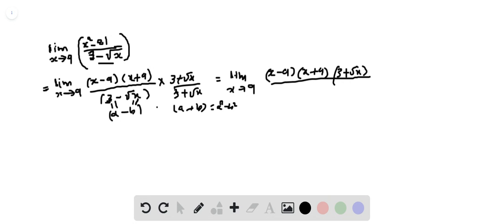So 3 minus root x into 3 plus root x becomes a squared minus b squared. So 3 squared, that is 9 minus b squared. b is root x.